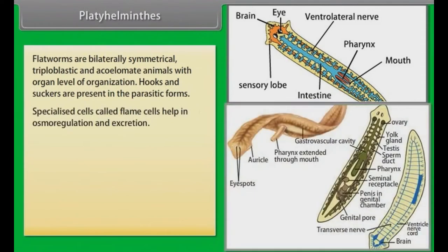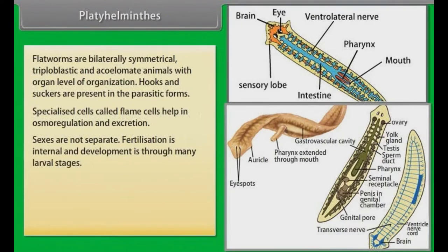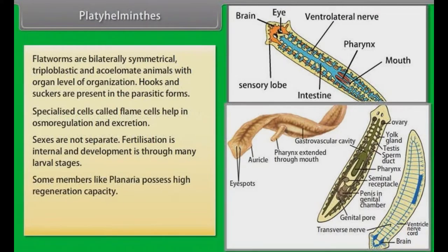Specialized cells called flame cells help in osmoregulation and excretion. Sexes are not separate. Fertilization is internal and development is through many larval stages. Some members like Planaria possess high regeneration capacity.